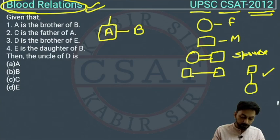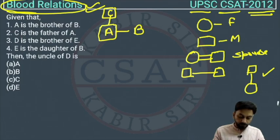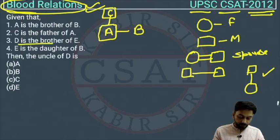The second statement: C is the father of A, so C is also male. The third statement: D is the brother of E — but D and E are not yet in our diagram, so we will handle them later.